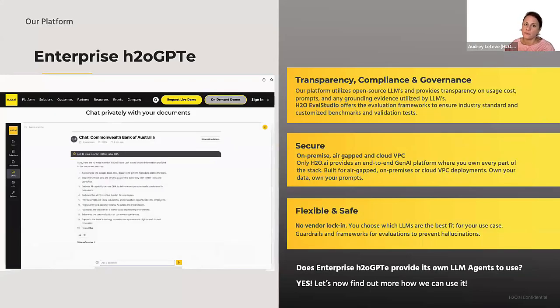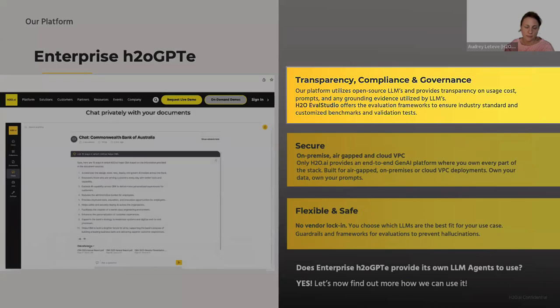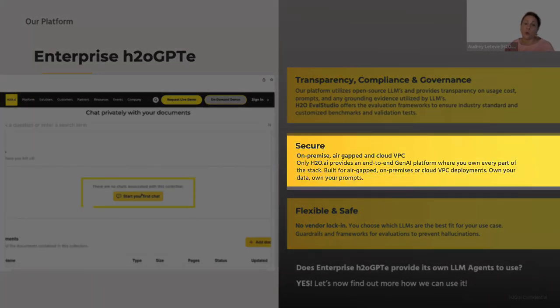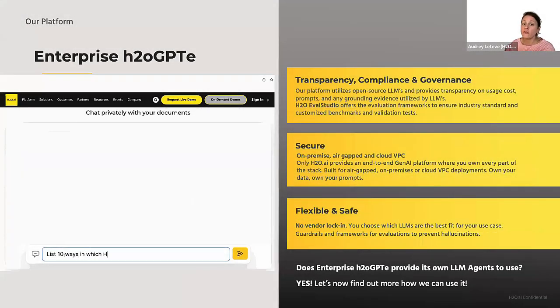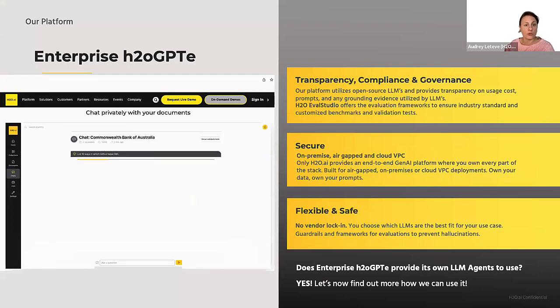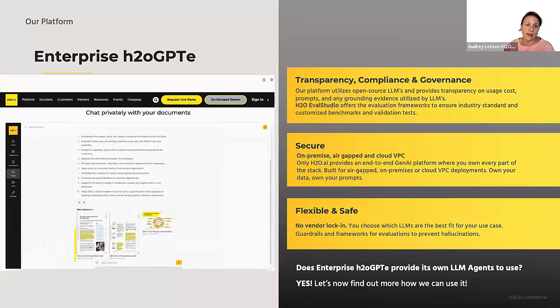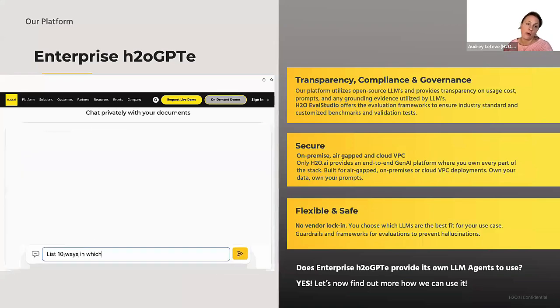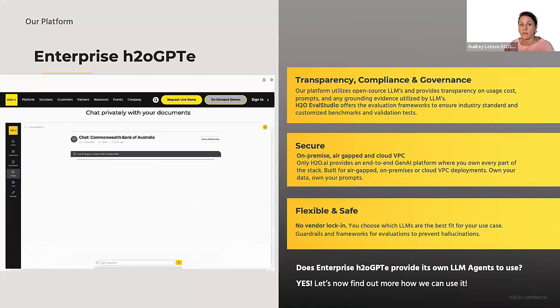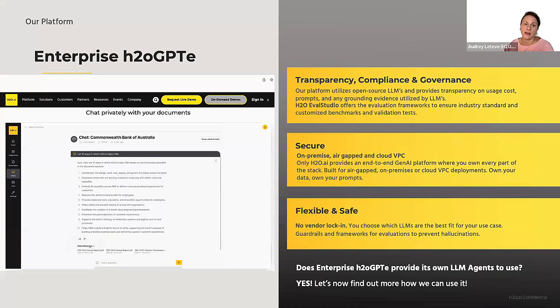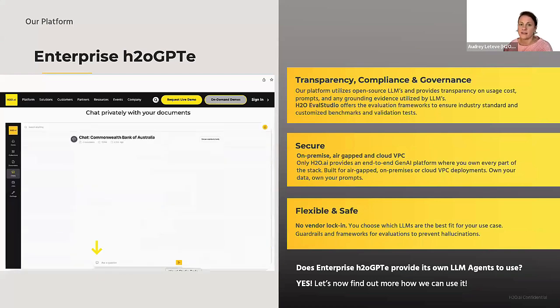Now, let's have a look at how Enterprise H2O GPT can help you with your use case. Enterprise H2O GPT provides its own LLM agents and toolkit that the user can choose to switch on or switch off. In addition, Enterprise H2O GPT is integrated with H2O Eval Studio, which among metrics to measure LLM retrieval augmented generation performance, also has GAIA integrated. Let's have a look at it.